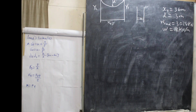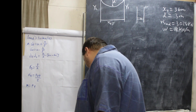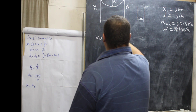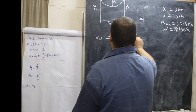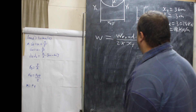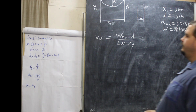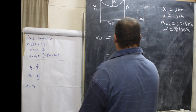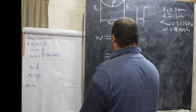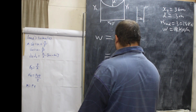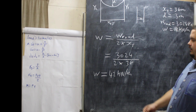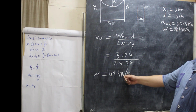Now, the question asks for the weight per meter carried by each of the two main cables. The weight of the cable equals the weight of the road divided by 2 times X total — that is 3024 over 2 times 36 — which equals 42 kilonewtons per meter. This is the weight of the cable per meter.